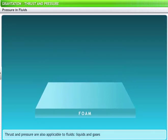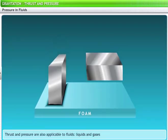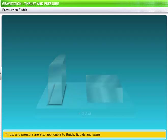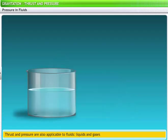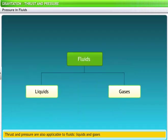So far we looked at examples of thrust and pressure in solids. However, thrust and pressure are equally applicable to the other states of matter: liquids and gases. Liquids and gases are collectively referred to as fluids since all fluids have the tendency to flow.